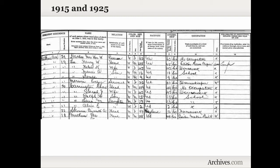We also see indications of their street address, so you can see where there is one building with multiple families living in that household. A lot of really good information on the 1925 and 1915 state censuses.